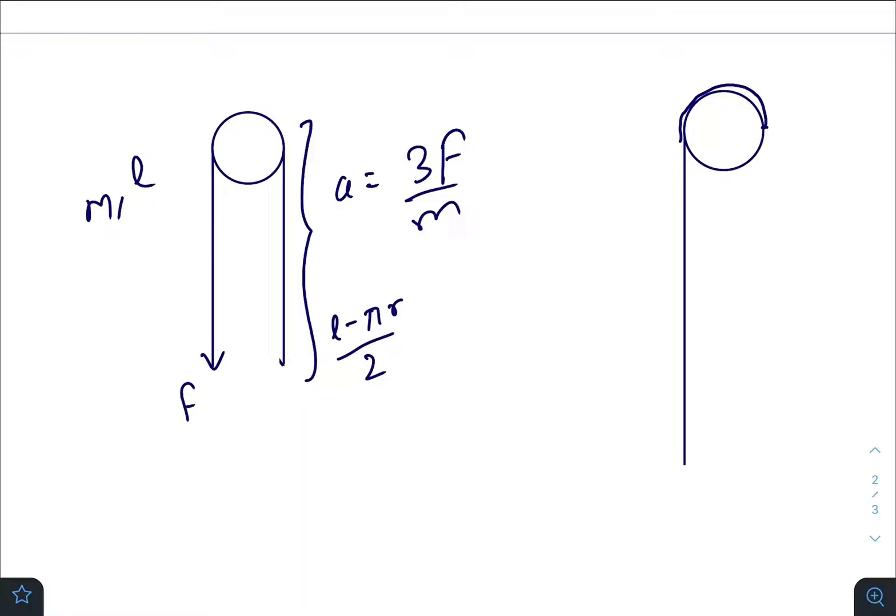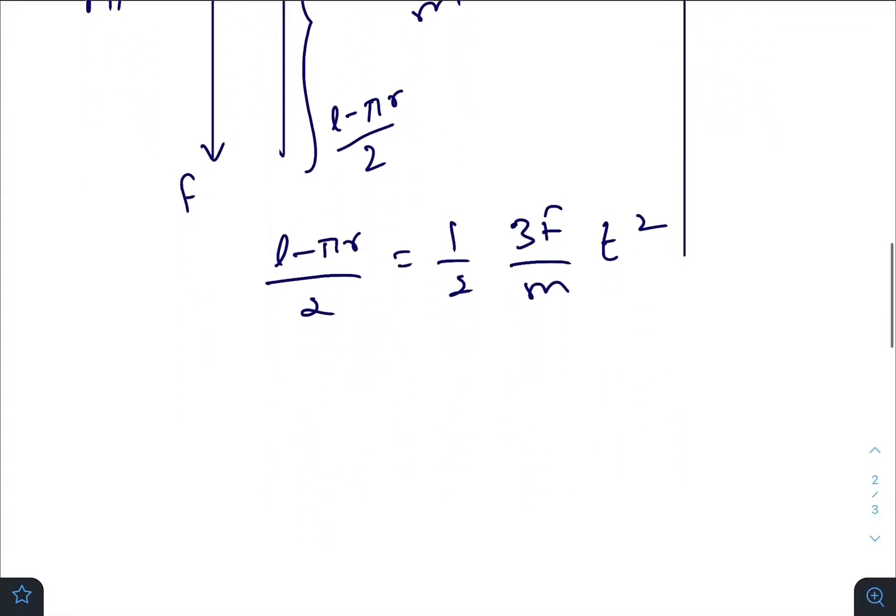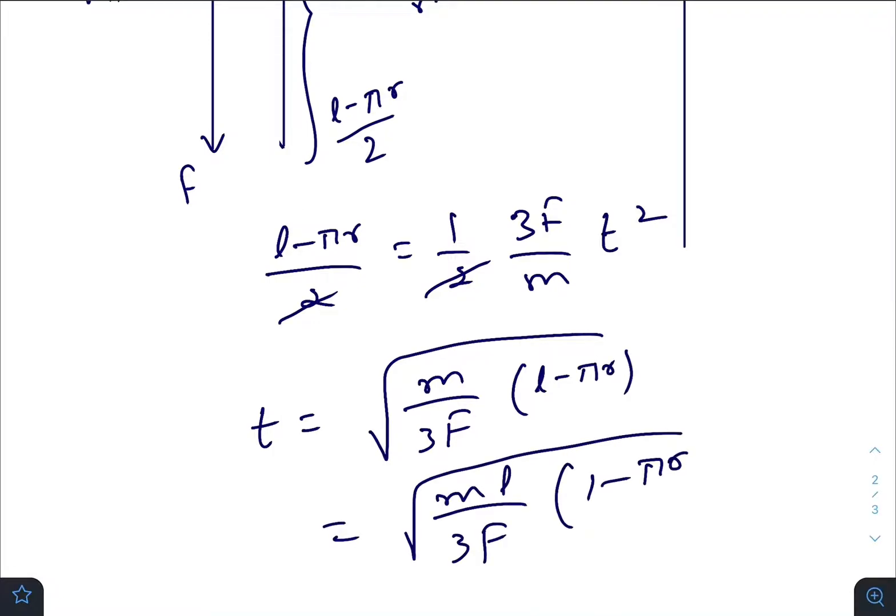This is the acceleration and this is the displacement. So displacement equals half a t squared. The 2 gets cancelled out, and t becomes square root of (m/3F) times (L minus πr). So the final answer becomes square root of (m/3F) times L times (1 minus πr/L).